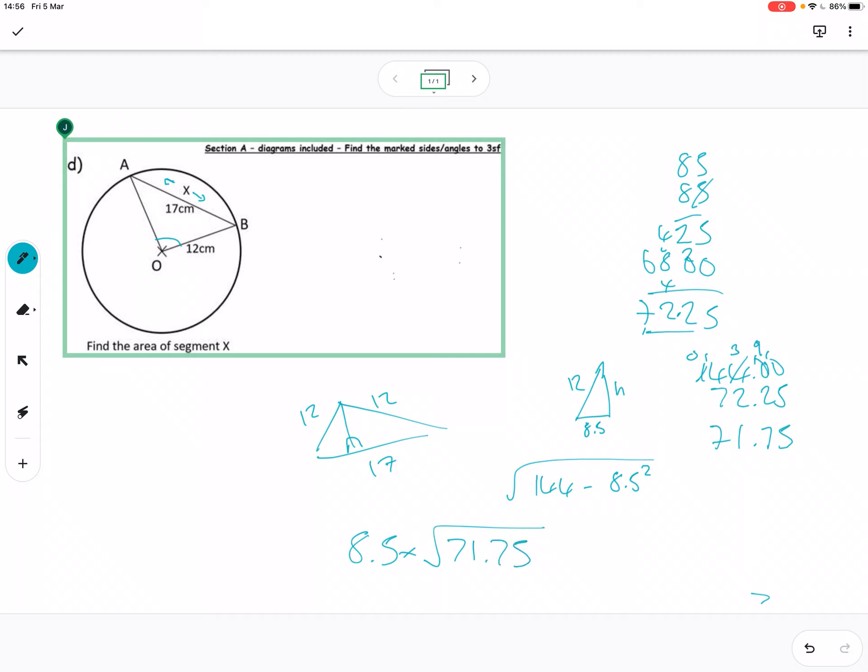Hey Siri, square root of 71.75? The square root of 71.8 is 8.47054. Hmm, that's almost 8.5, isn't it? Is that a coincidence?